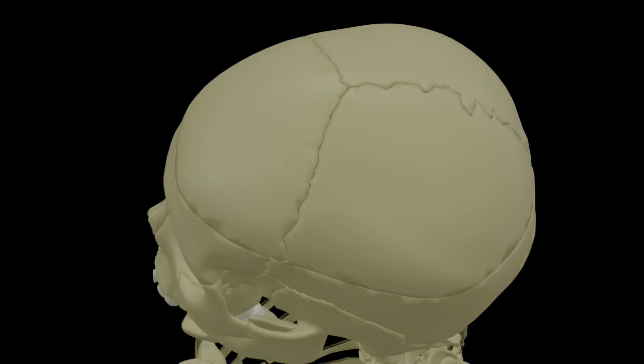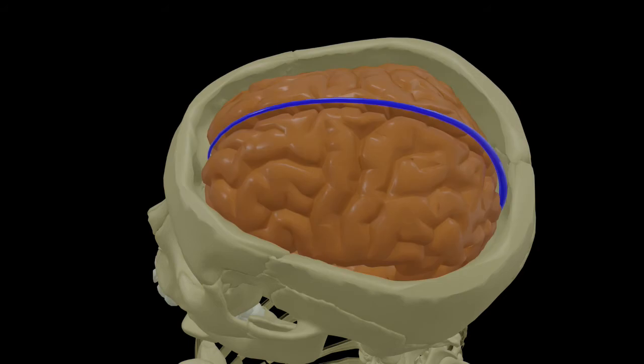Inside the skull, the veins are termed as venous sinuses because they differ from usual veins in certain aspects. Cranial venous sinuses is another important topic - what are the cranial venous sinuses, how they differ from the usual veins - we will see all those things in detail in some other video. For the time being I will stick to the outline. Here we have the skull; in order to see inside the skull we will remove the vault. What you can see is along the upper border of the falx cerebri - the falx cerebri is the dural fold which separates the two cerebral hemispheres - we can see a venous sinus called the superior sagittal sinus.